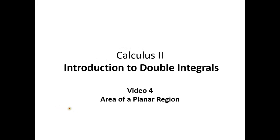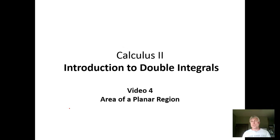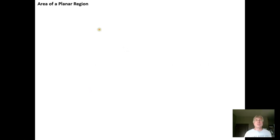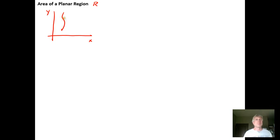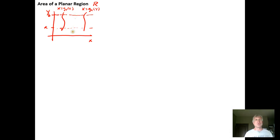In this video we're going to look at the concept of finding an area of a region using an iterated integral. Suppose you've got a region R in the XY plane and you want to know its area. Let's say that region is bounded by two functions of Y: X equals G sub 1 of Y and X equals G sub 2 of Y, and we run it from A to B in the Y direction, bounded by horizontal lines.